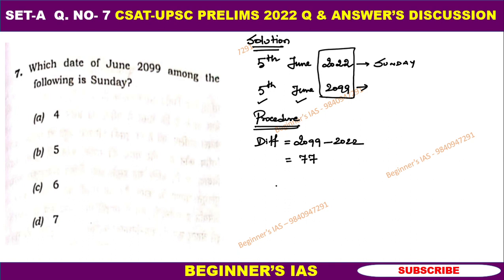Step number two: find out how many leap years are present. Leap year is very important. What do you mean by a leap year? The last two digits are divisible by 4 — then it is a leap year.